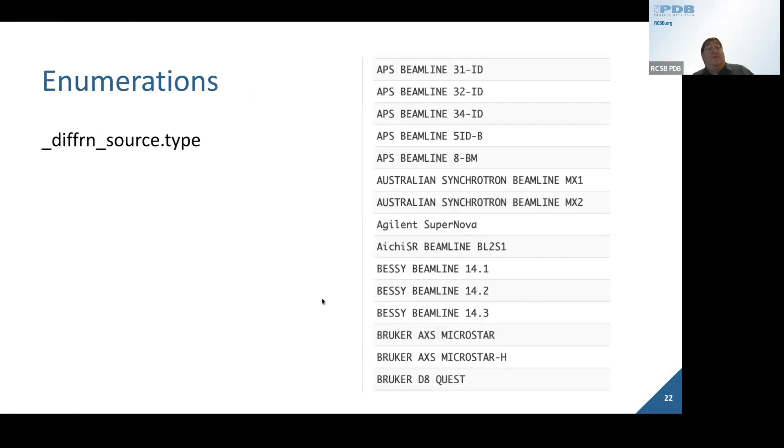We also have enumerations in the dictionary. This shows an example of what we call the diffraction source. We have a number of synchrotrons enumerated here, along with their particular beam lines. This helps ensure that there aren't typographical errors entered by depositors and allows us to have control of the data coming in and being put into the archive.